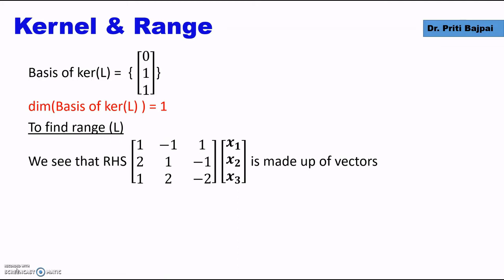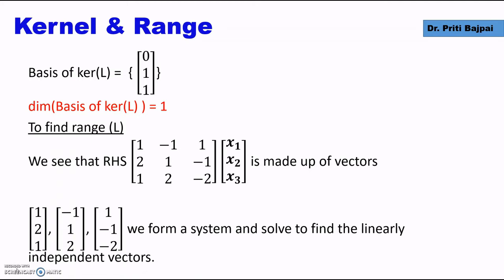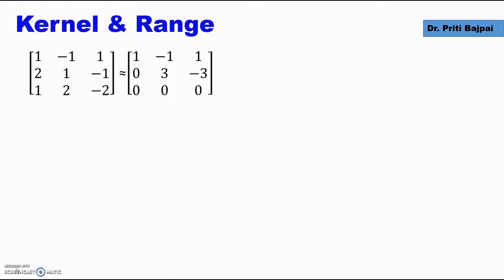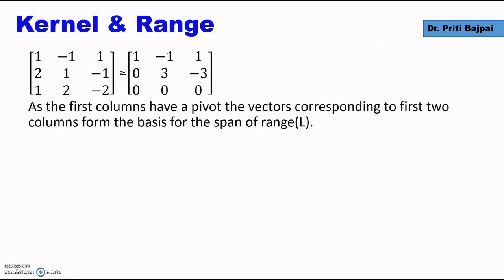To find range L, we see the right-hand side is made up of three column vectors: (1, 2, 1), (-1, 1, 2), and (1, -1, -2). We check which of the three vectors are linearly independent by arranging them in a matrix and reducing to row echelon form. We see that the first two columns have a pivot, so they are linearly independent. Hence the basis for the span of range L consists of (1, 2, 1) and (-1, 1, 2). Since there are two vectors in the basis, the dimension of range L is 2.